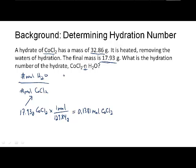Then we need to figure out how many moles of water. But to do that, we need to know the mass of the water. The mass of the water is how much we lost. We start with 32.86 grams. Once we heated it, we ended up with 17.93 grams. That loss is the water that left. So the grams of water equals 32.86 grams minus 17.93 grams, and we lost 14.93 grams of water.